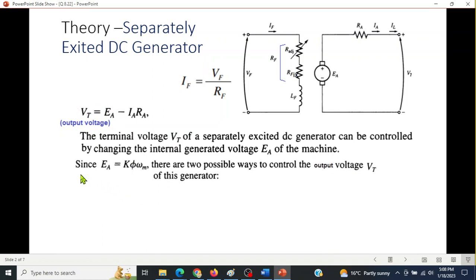Now, Ea depends on this, according to this formula. K is constant. It depends on the flux phi, which depends on the field current, and it also depends on omega m, the rotational speed.